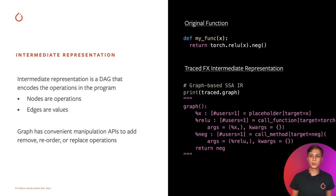Once a program is captured by Torch.fx, it represents the captured operations in a directed graph or DAG representation. This representation records the functions, modules, and methods called and the data dependencies between them. Nodes in the DAG are the operations, and the edges are the values. This DAG representation has convenient APIs to add, remove, reorder, or replace operations, allowing you to transform the code as you please.